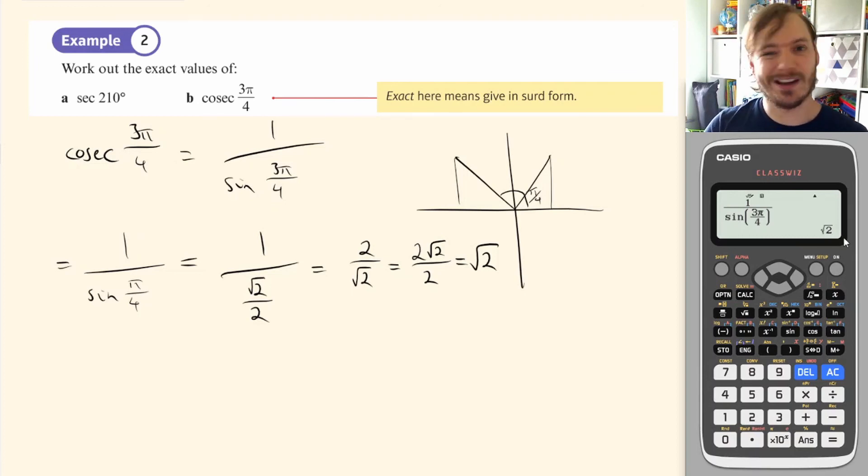It's really important that your calculator is in the right mode. Otherwise, you're going to get absolute rubbish as your answer whenever these trig functions are involved. These are easy. They just tap it in your calculator, but you need to tap in 1 over sine or cos or tan, because cosec, sec and cot don't exist on your calculator.